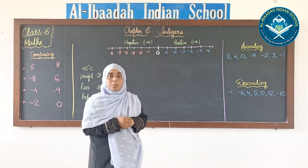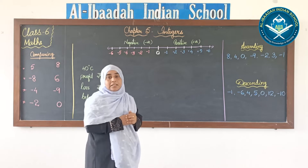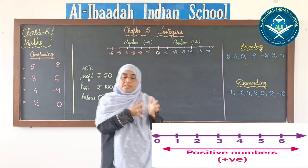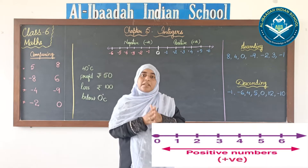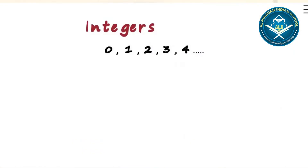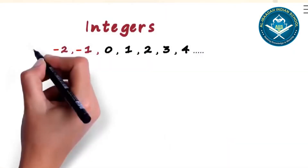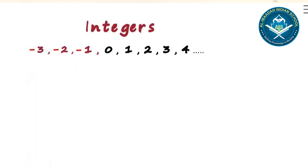Today we are going to discuss another group of numbers — that is integers. In integers you will find positive as well as negative numbers. You might be wondering what is the role of negative numbers. We use negative numbers when we are talking about temperature or profit or loss in money matters.